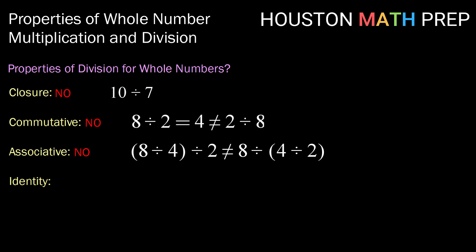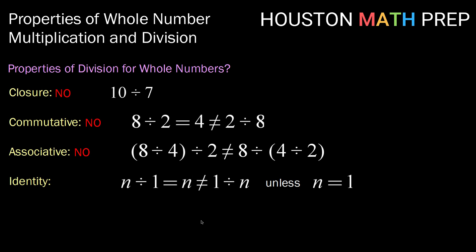And finally, the identity. Notice that for division, while it is true that any whole number divided by 1 is that whole number, it is not true that if we swap them around, 1 divided by n is always equal to n — in fact, that is only true for the whole number 1. So therefore, division does not have the identity property.